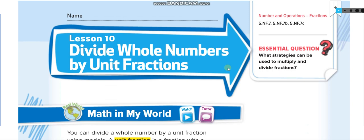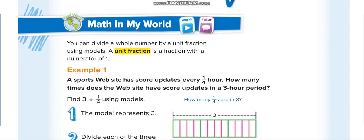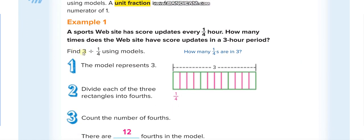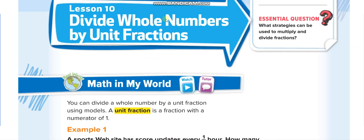Let us start today's lesson: Divide Whole Numbers by Unit Fractions. If you remember, before the last lesson we took a lesson on multiplying whole numbers by a fraction. Here we are working with unit fractions. First, understand what unit fractions are: any fraction which has one in its numerator — 1/4, 1/5, 1/10, 1/1000, 1/50000, 1/1000000 — these are all unit fractions.